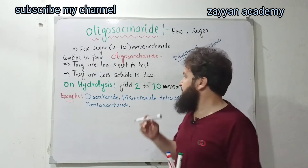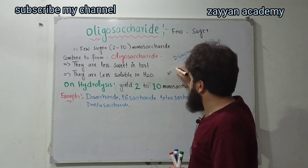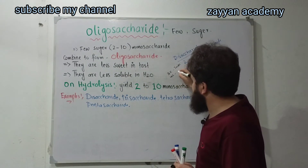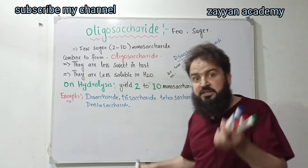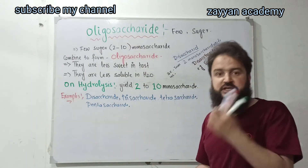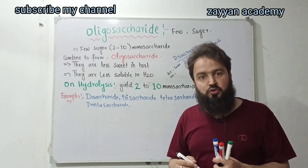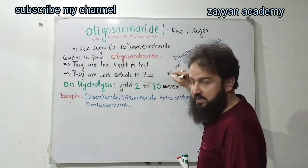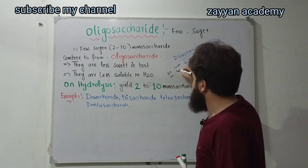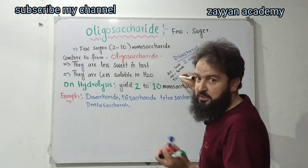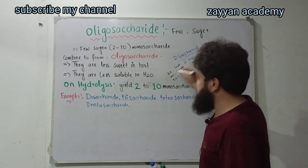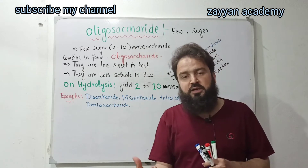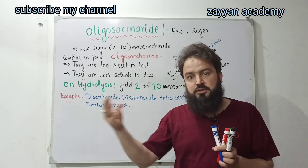We have monosaccharide: three carbons combined — triose; four carbons — tetrose; five carbons combined — pentose. Examples of monosaccharide are glucose and fructose. Two monosaccharides combined form a disaccharide; three form a trisaccharide.